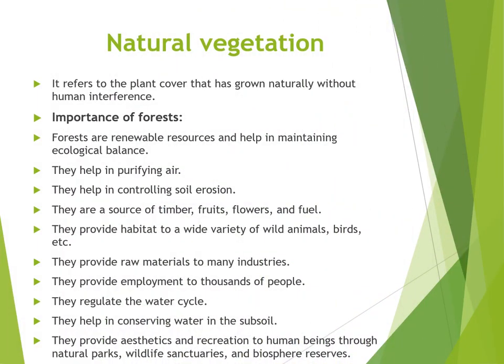Natural Vegetation refers to the plant cover that has grown naturally without human interference. Grasses, shrubs, and trees which grow naturally constitute the natural vegetation of an area. Forest refers to a large tract of land covered with trees and accompanying undergrowth of shrubs, herbs, and sustaining thousands of life forms which include both plants and animals. Now, what's the importance of forest? Let's have a look.